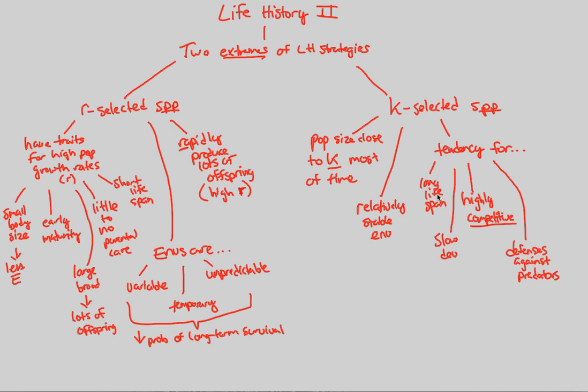Because you have slow development and a long lifespan, that would mean you usually have a low reproductive rate, so a low r, not a high r. Thus, we call this K-selected. And finally, you also definitely have parental care because all of these components combined together mean that parental care is definitely there.